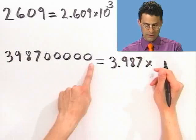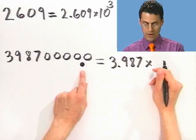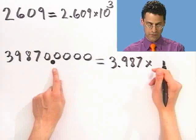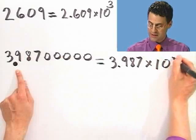To get that decimal point to go over there, what do I do? Let's use it again. We go 1, 2, 3, 4, 5, 6, 7, 8. So I have to put in here 10 to the 8th power.